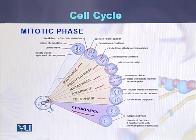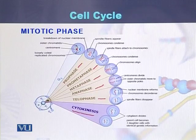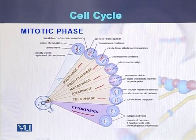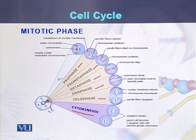In summary, the cell cycle consists of two steps. The first is interphase, where the cell gets nutrients, performs replication of DNA or genetic material, and enlarges so that it becomes ready for division. The second phase is the mitotic phase, where a single cell divides into two daughter cells.